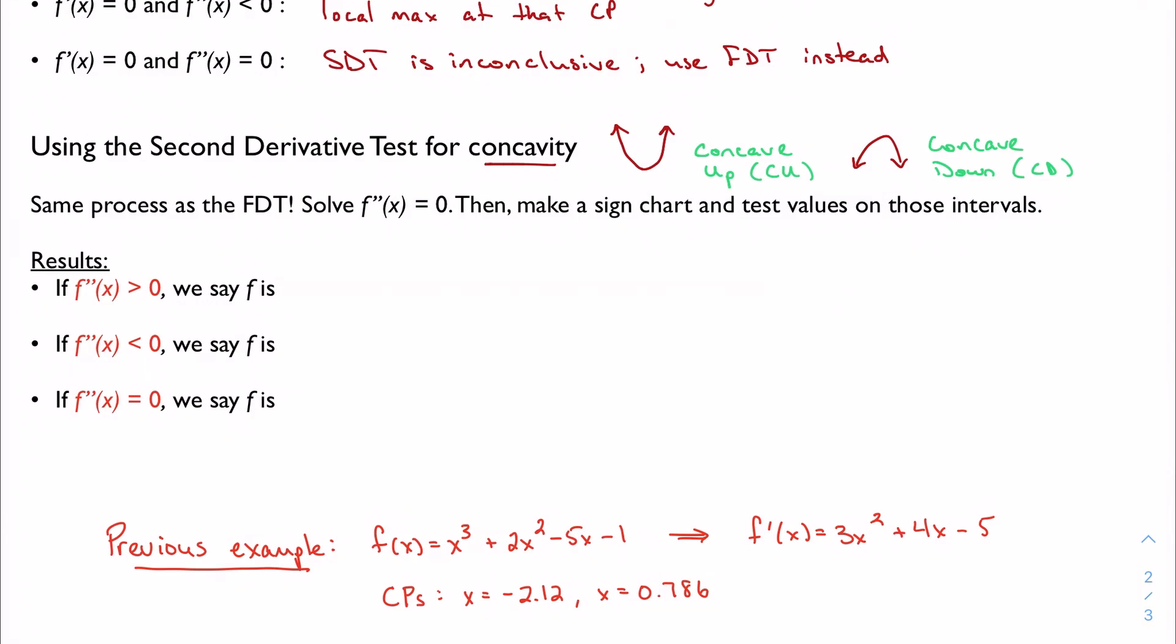So it's the same exact process as the first derivative test. I'm going to solve this equation with the second derivative equal to zero. So find the second derivative, set it equal to zero. We're going to make a sign chart, and we're going to test values again.